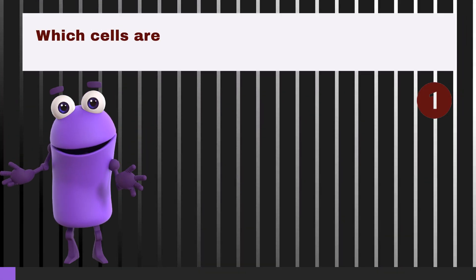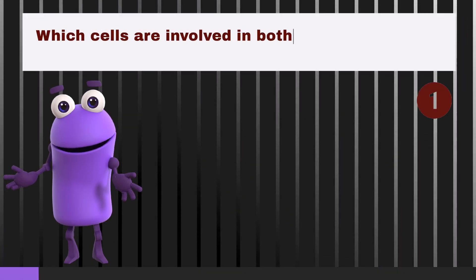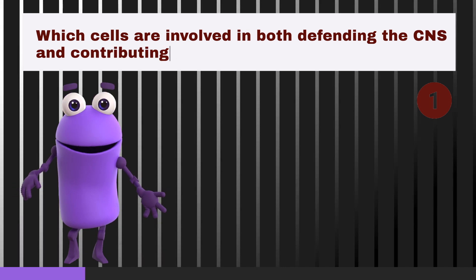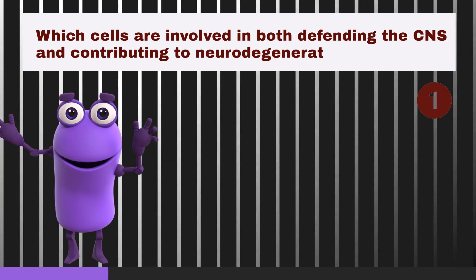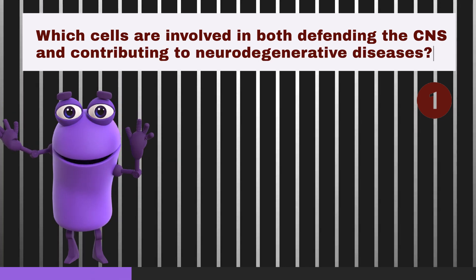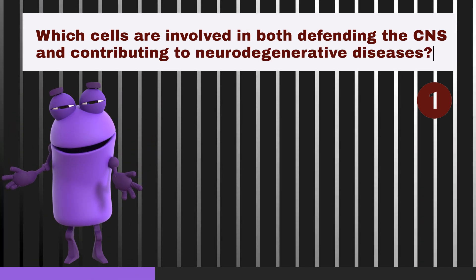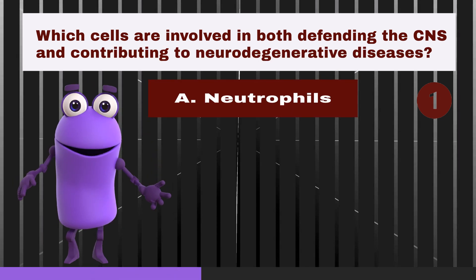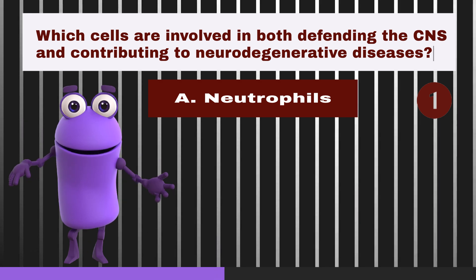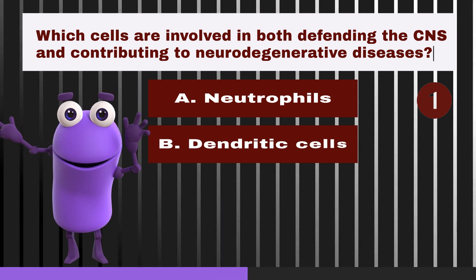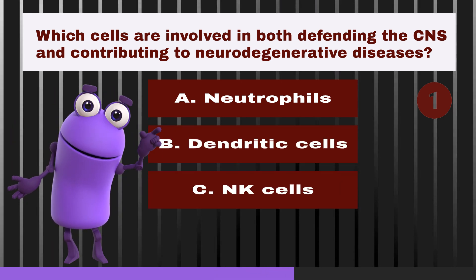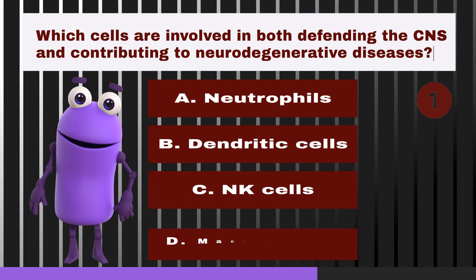Which cells are involved in both defending the central nervous system and contributing to neurodegenerative diseases? A. Neutrophils. B. Dendritic cells. C. NK cells. D. Macrophages.